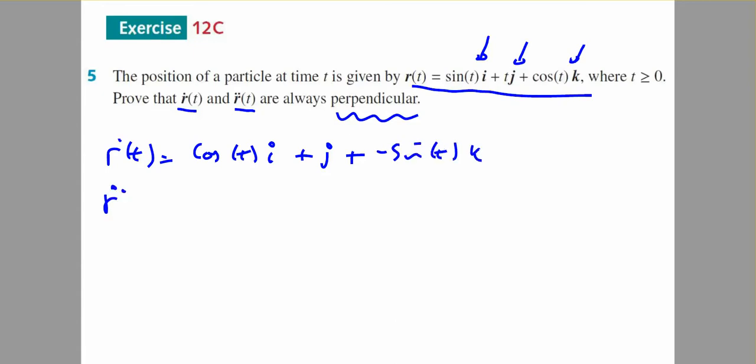And the second derivative is the derivative of the first derivative. The derivative of cos(t) is minus sin(t) in the i, plus the derivative of 1 is 0 in the j, and the derivative of negative sin(t) is negative cos(t) in the k.